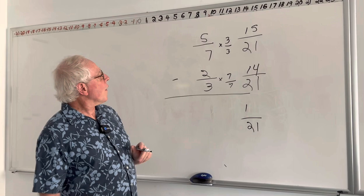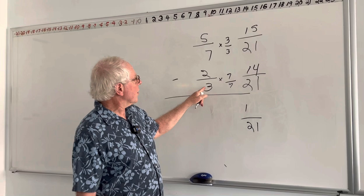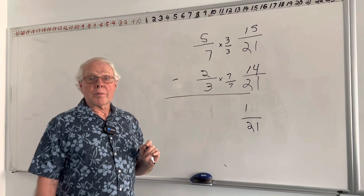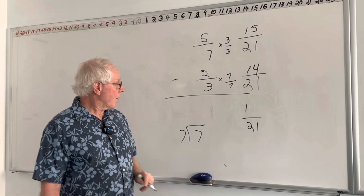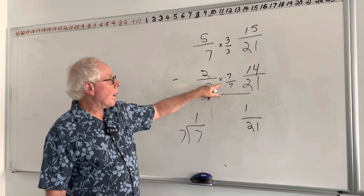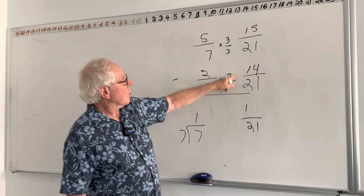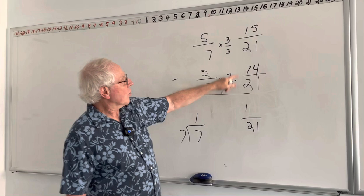15 minus 14 is 1. Our answer is 1 over 21. What gives us the right to do this? We multiplied the denominator and numerator by the same number — in this case, 7 over 7. Since all fractions are a division problem, 7 divided by 7 is 1. All we're doing is multiplying by 1, which doesn't change the value — it just changes the name to give us a common denominator so that we can do the subtraction.